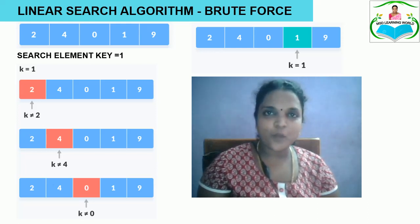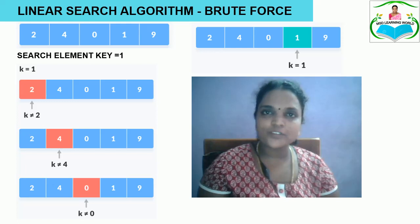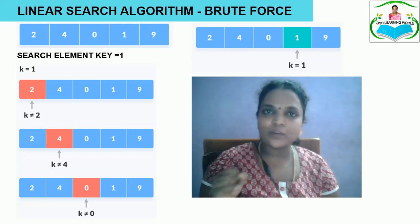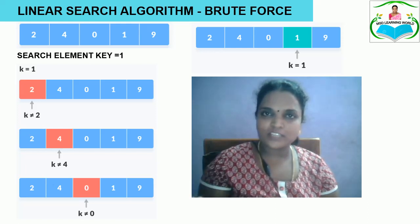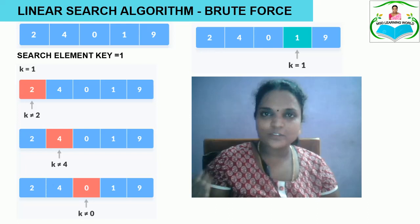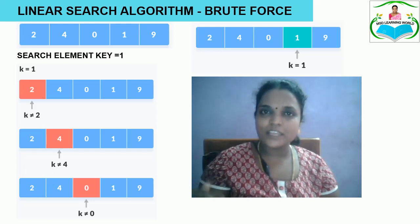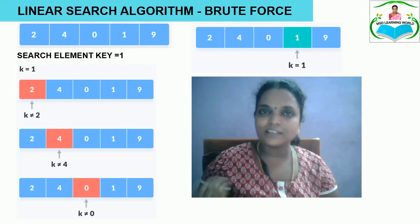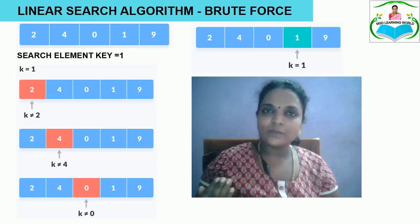Let us see an example for linear search. The array contains elements 2, 4, 0, 1, 9 — five elements with indices 0 to 4. Assume the key element we want to search is 1, so k = 1. The search checks 2 == 1 (not true), then 4 == 1 (not true), then 0 == 1 (not true), then 1 == 1 (true). At this point the index is 3, so index = 3 is returned as the result. Once the target value is found, the index of the element is returned. If the element is not found, it returns -1.